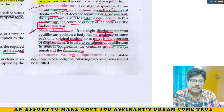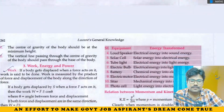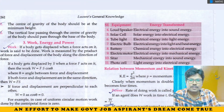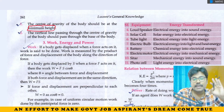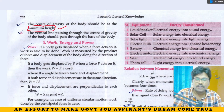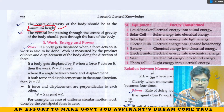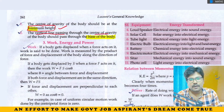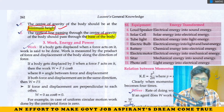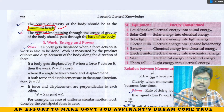For stable equilibrium, two conditions must be satisfied: first, the center of gravity of the body should be at minimum height; second, the vertical line through the center of gravity should pass through the base of the body. With these two conditions met, the body is in stable equilibrium. This completes the friction and equilibrium concept.